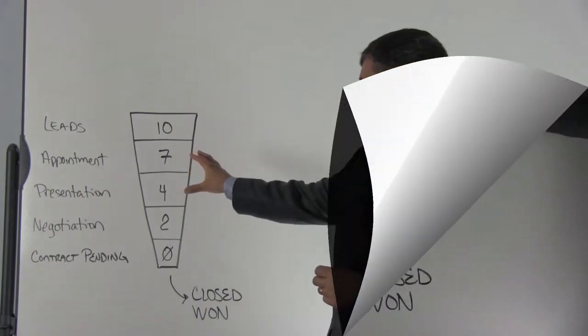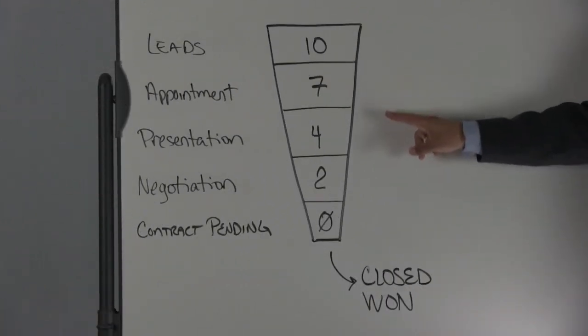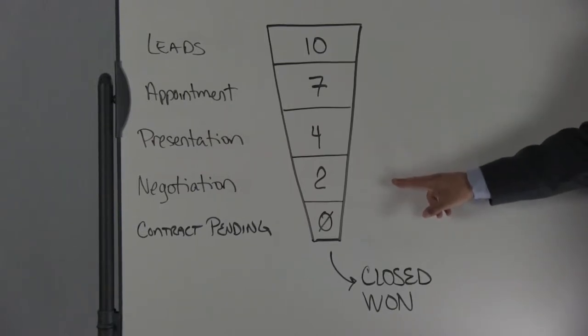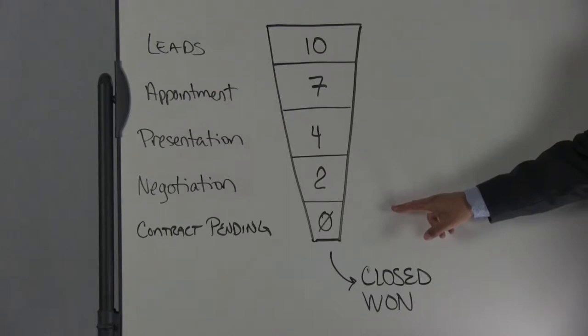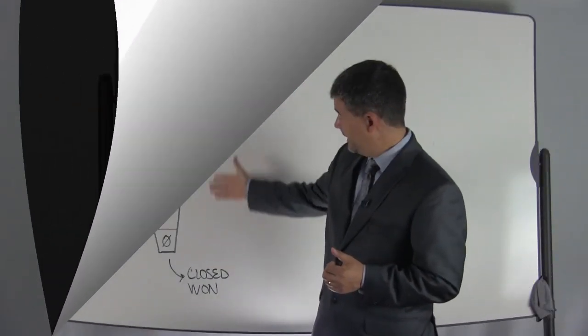Imagine this is your funnel. You have 10 leads, 7 appointments, 4 in the presentation stage, 2 in the negotiation stage, and nothing in contract pending. If you were to look at Salesforce.com's Daily Dash, this is exactly what you would see. And now you can see why we call the funnel skinny.